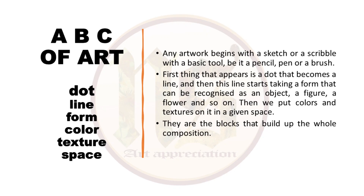Any artwork begins with a sketch or a scribble for which you use a pen, pencil or a brush. First thing that appears is a dot which becomes a line. This line becomes a form which you can recognize as an object, a figure or a flower. Thereafter we put colors and textures on it in a given space — your paper, your canvas or whatever you are using to make that artwork. These are all elements of art at play; they are the building blocks of your whole composition.